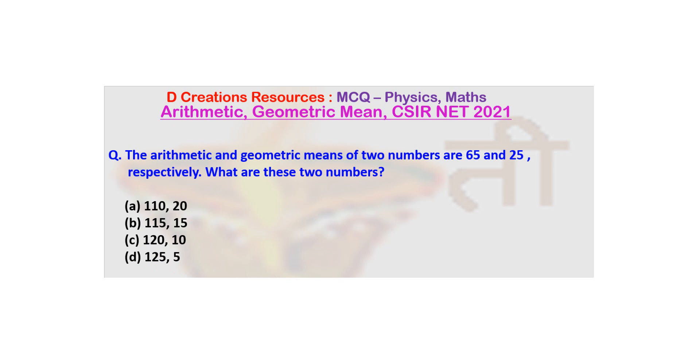Always when you are given a question, you should first write down what is the given information and what is required. Here, the given information is: Arithmetic mean is 65 and Geometric mean is 25. What is required? We want to find out what are these two numbers.